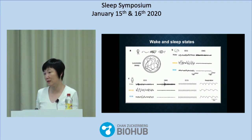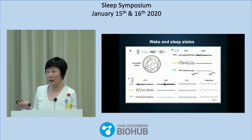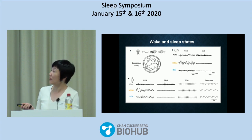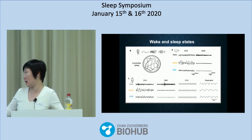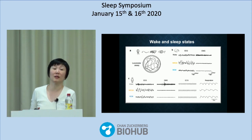For humans, we measure EEG, EMG, and also heartbeat and breathing. During sleep, we basically shut down somatic motor activity. We also slow down autonomic motor activity. The point is that falling asleep is not just about changing the brain state — it's also about reducing these different types of motor activity.